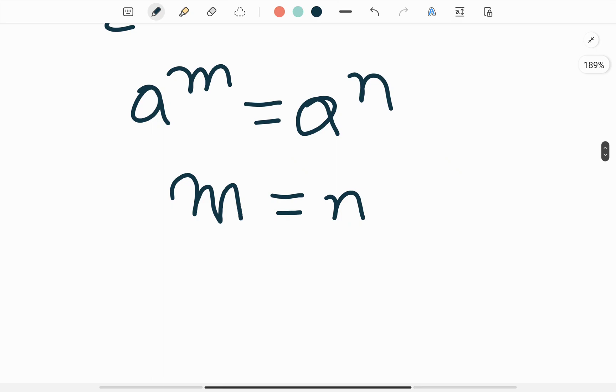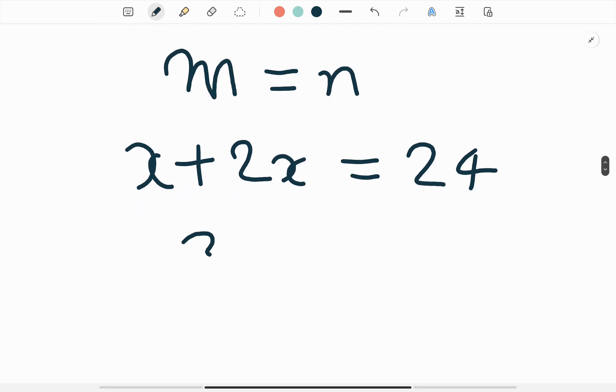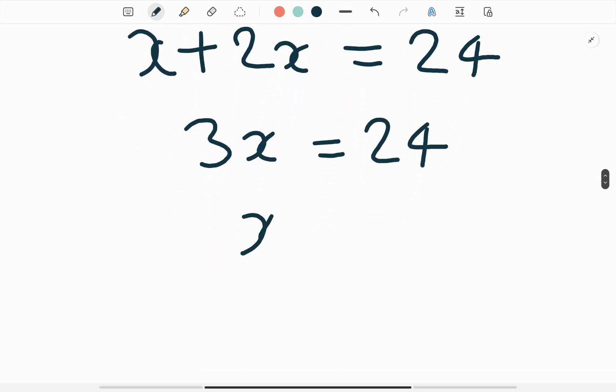Now we write as x plus 2x is equal to 24. So here is 3x is equal to 24, and x is equal to 8.